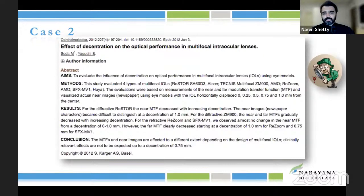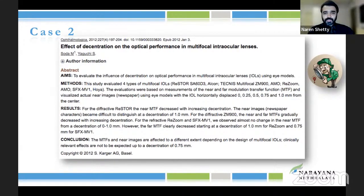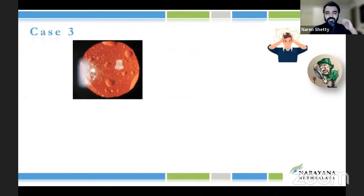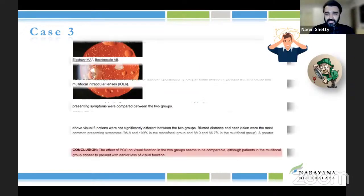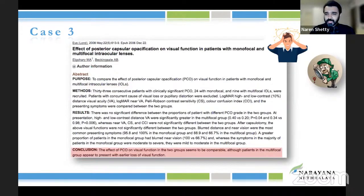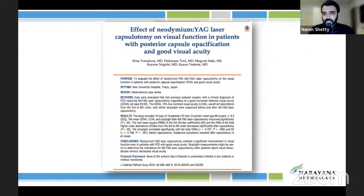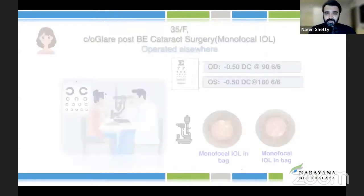Any decentration — even the smallest change, anything like a fraction of a millimeter — causes a lot of halos and glare because it really affects the quality of vision. PCO is something that affects premium lenses at an early stage. Please do not shy away from doing a YAG capsulotomy in trifocal patients if the patient complains of any kind of vision disturbance.